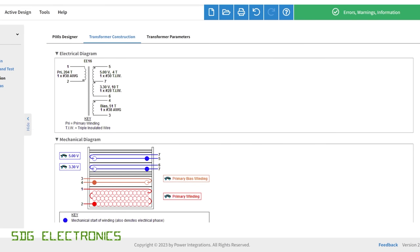Just to remind you what the transformer is that we're trying to wind, it's this one that's illustrated in the design here on the PI Expert website. So 204 turns on the primary then we've got 51 turns for the bias feedback winding and then just 10 and 4 turns for the centre tapped secondary.